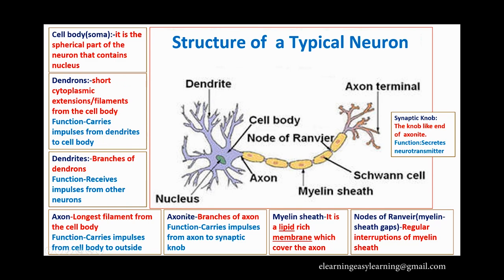First is the cell body, otherwise called the soma. You can see the spherical part of the neuron — that is the cell body. Like any other cell, it is also provided with the nucleus, cytoplasm, Golgi bodies, and mitochondria. All these cell organelles can be seen in the cell body.